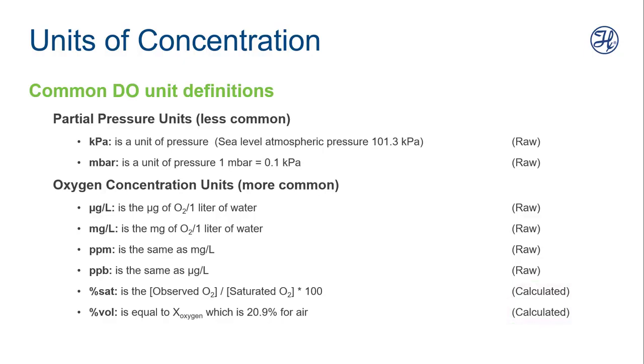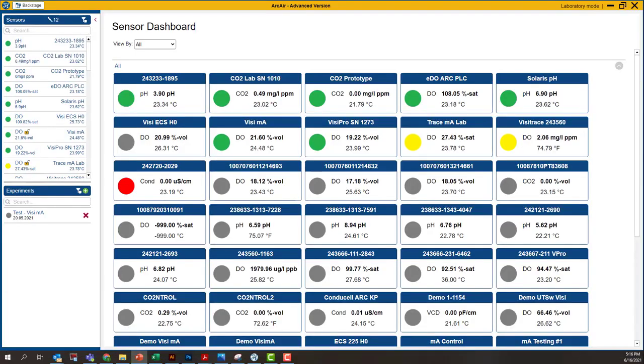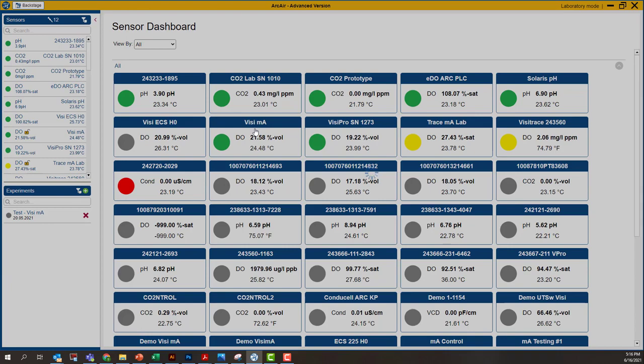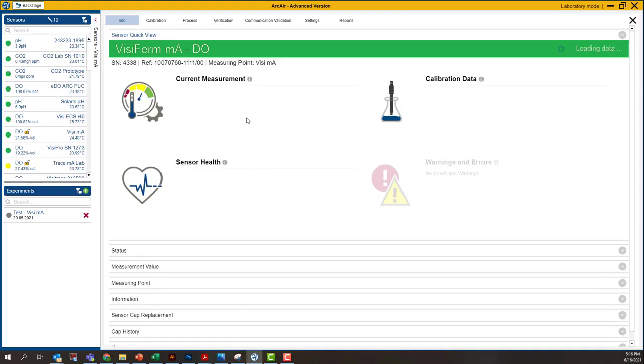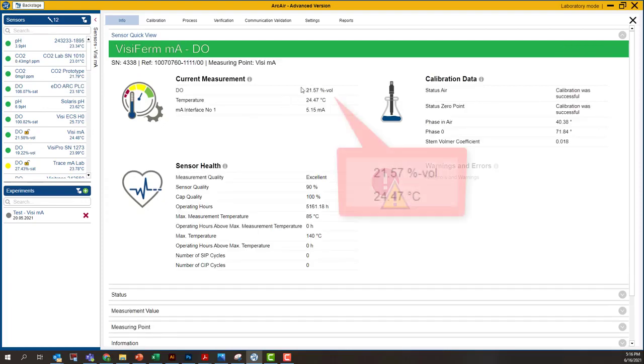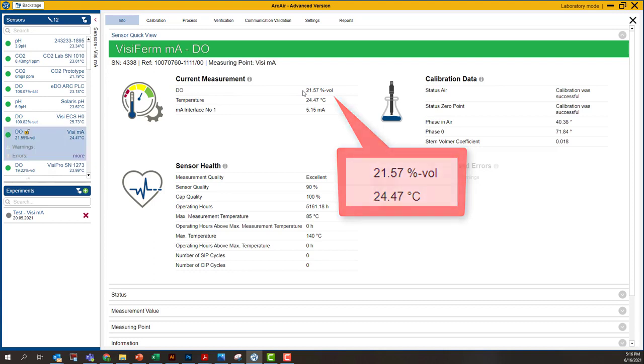So what does that mean? Well, let's actually take a look at one of our sensors here to help understand. I'm going to click into this VisiFirm MA I've got set up here. This sensor is currently reading around 21.6% by volume. And please note, I haven't gone through a calibration on this. But that's about what we would expect as far as oxygen in air, and the sensor sitting in air.